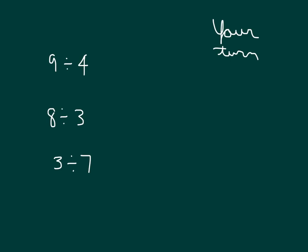Your turn again. Copy down these division expressions and rewrite them as fractions. Nine divided by four is equal to nine over four. That's also nine fourths. Eight divided by three. And then we have three divided by seven, which would be three over seven. That's three sevenths.